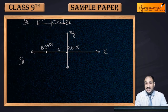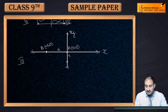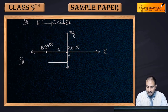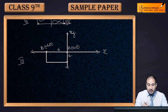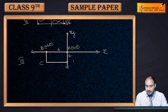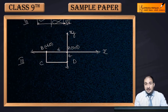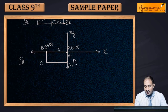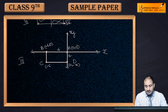Similarly, moving 4 units downward from the origin gives us point D on the y-axis. Going 4 units below the origin, D lies on the y-axis, so its coordinates are (0, -4). Now for point C, which is 4 units below B, its coordinates become (-6, -4). This completes the rectangle.